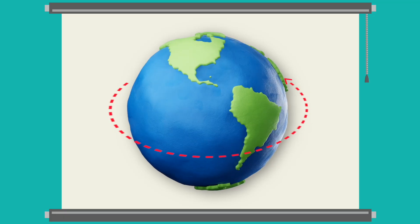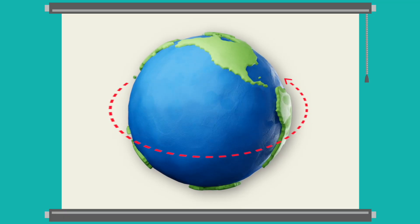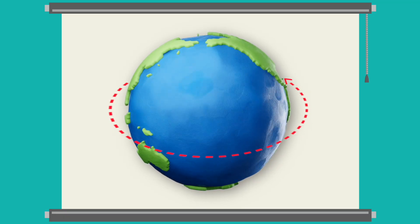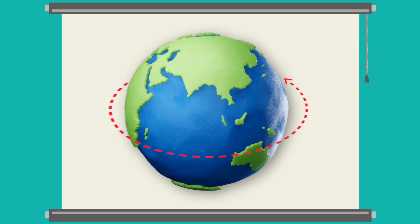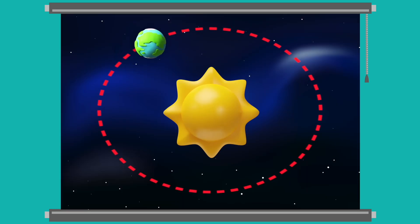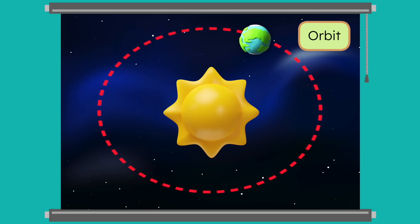We learned that the Earth also rotates or spins in a circle. That happens once every day, and it's why we have night and day. But the Earth's orbit, or its path around the Sun, completes once every year.